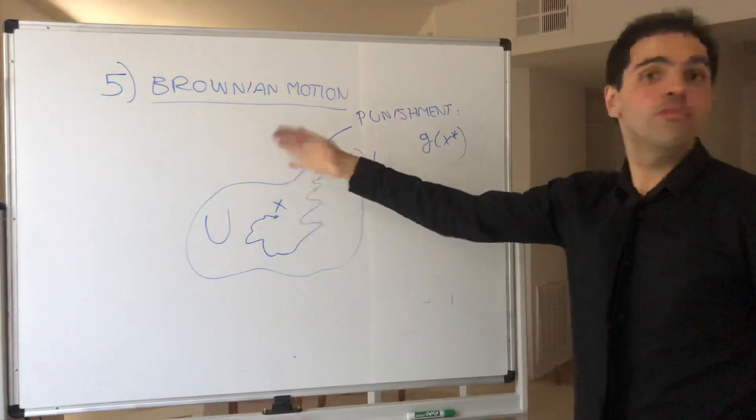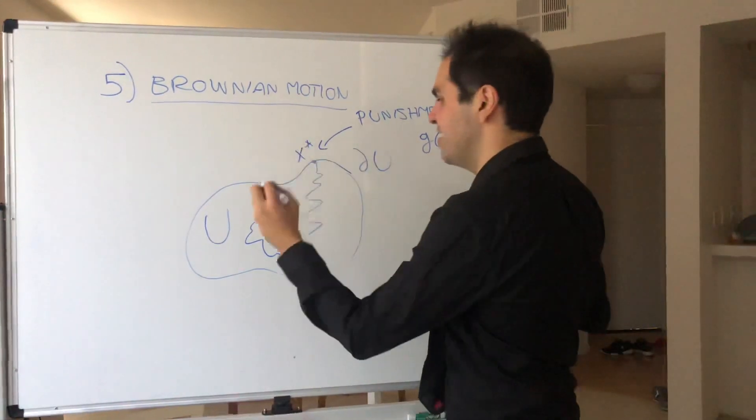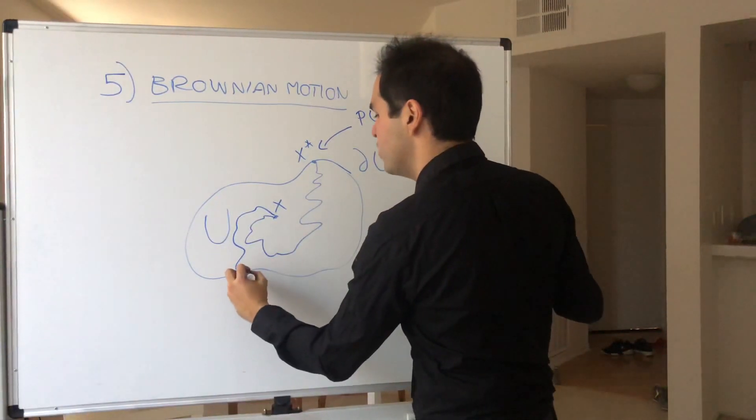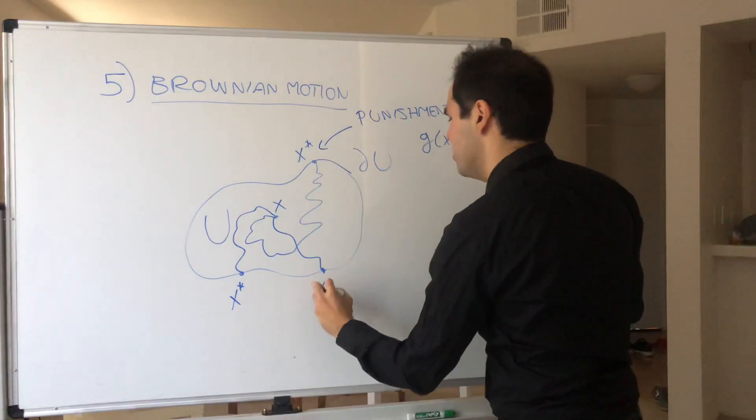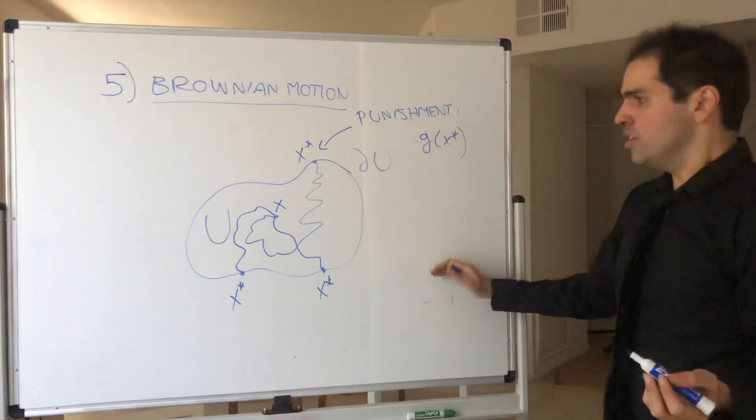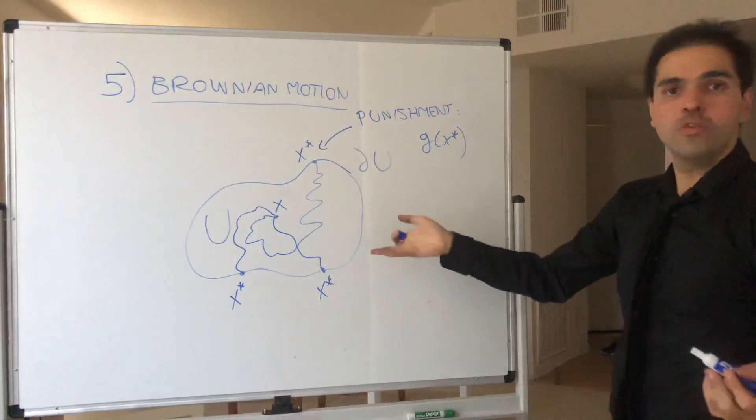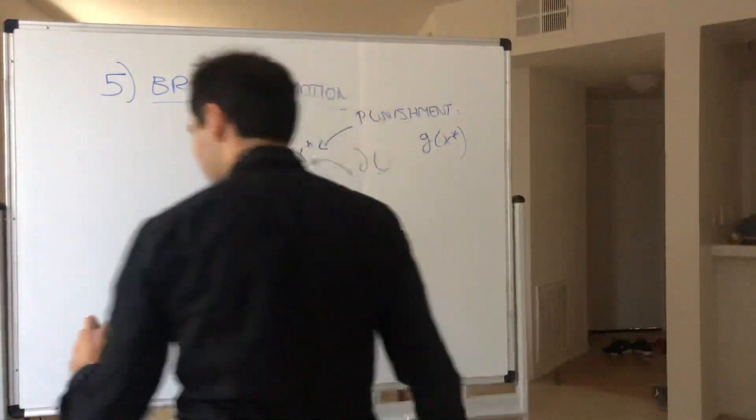Now, of course, this is a random event, right? Because not everyone will reach exactly this point. You could also reach this point x star. You could reach this point x star. So completely random event.